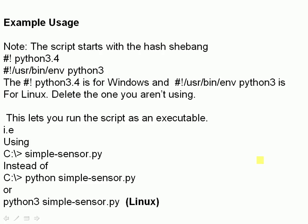The script is started using a hashbang line at the top. One line is for Windows and one is for Linux — you move the appropriate one to the top. This lets the OS run the script as an executable, so on Windows you can call it as "simple_sensor.py" and on Linux as "python3 simple_sensor.py" or just "simple_sensor.py".